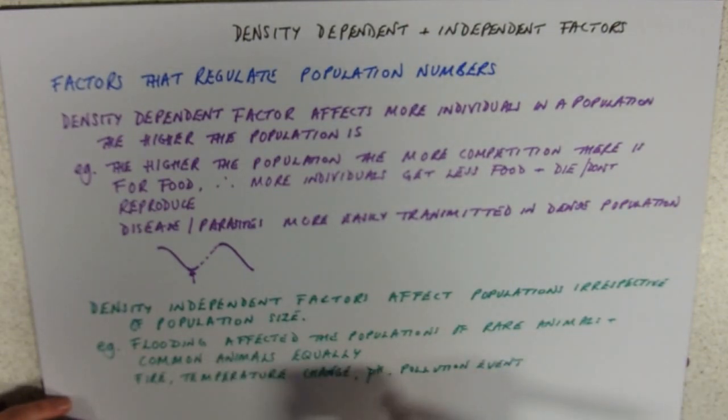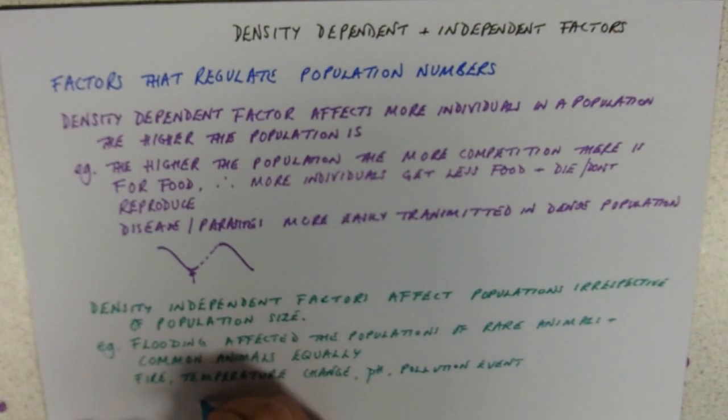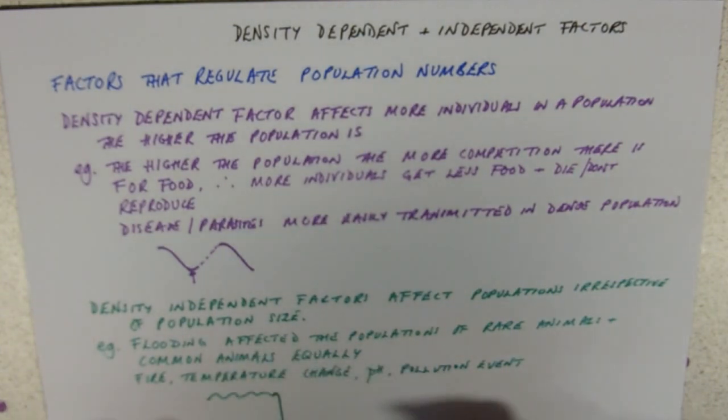So if you were in the Gulf of Mexico when BP spilt a load of oil in it and you were looking at a population, you could have a population that was doing very high numbers and it would suddenly crash, or you could have a population that had very low numbers and that would suddenly crash as well after the dramatic oil spill.